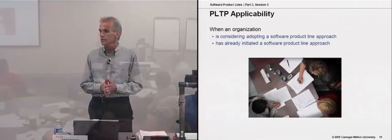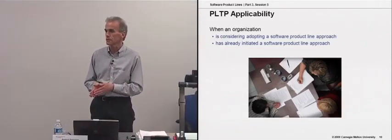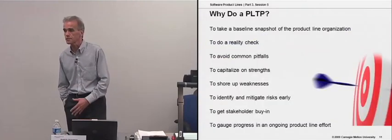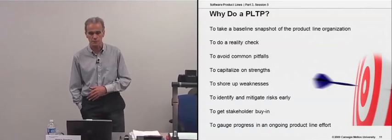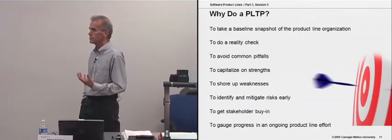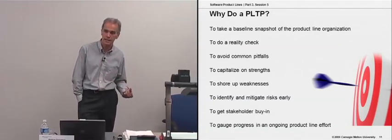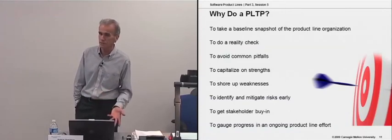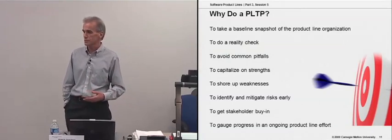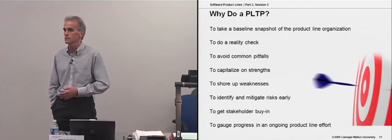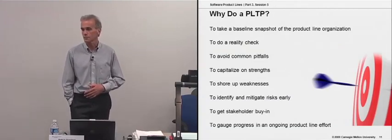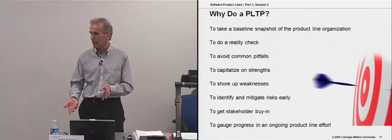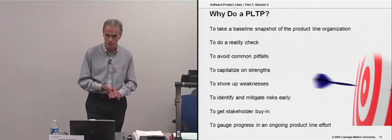You can do this either when you're starting off a software product line effort, or if you have a product line effort already underway. A couple of our customers have done this, and we've actually done a reprobe on two customers. The whole idea is that this is a risk mitigation exercise to find out whether you have a chance of succeeding — do you have the necessary expertise, do you have the process discipline? All of the questions are based on the practice areas of the framework: configuration management, requirements engineering, the ability to create a production plan for a product line organization. The findings can be used to identify gaps and areas of expertise that need to be plugged for a full-up product line operation.